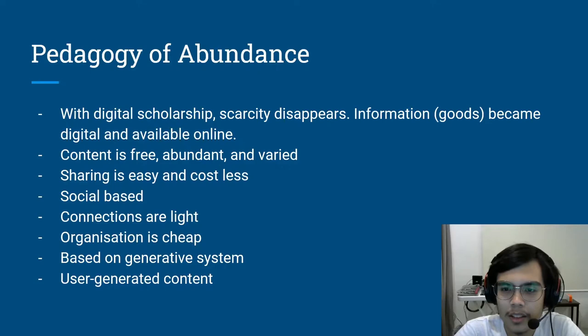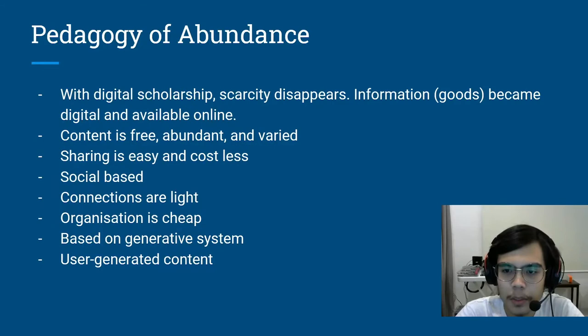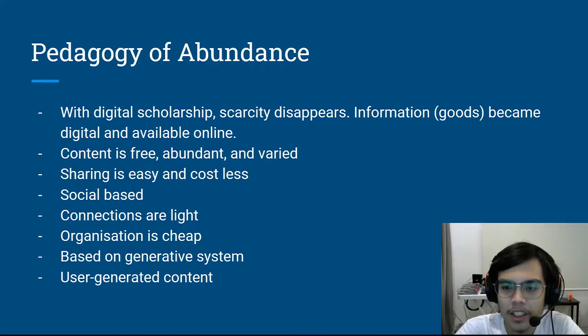However, there are some that seek to establish the traditional economic model by placing DRMs, or digital rights management, over some digital resources. Examples of these can be seen in subscriber-based digital content, such as Spotify for music and Netflix for video entertainment. Trying to skip over these DRMs would usually result in legal action.